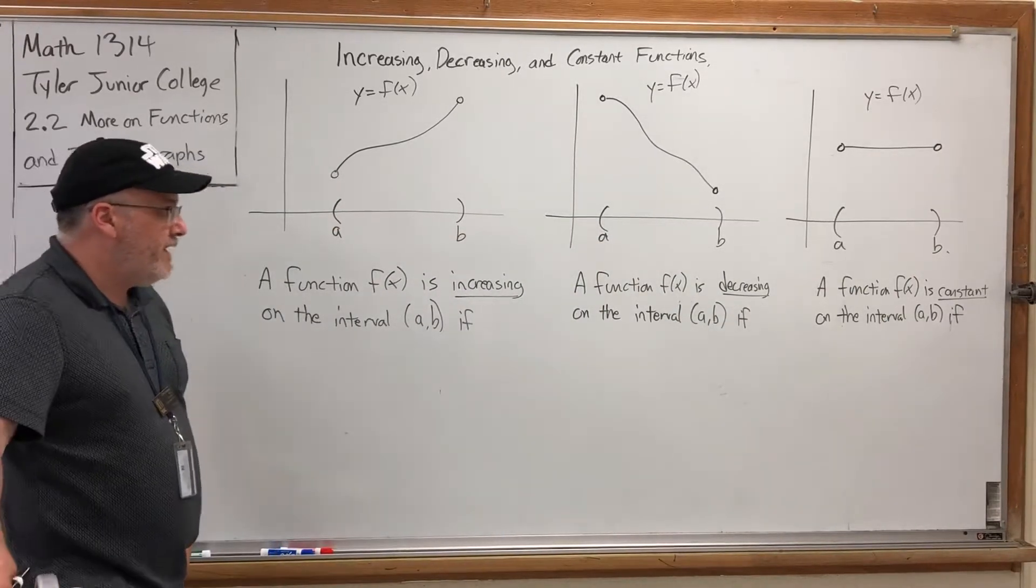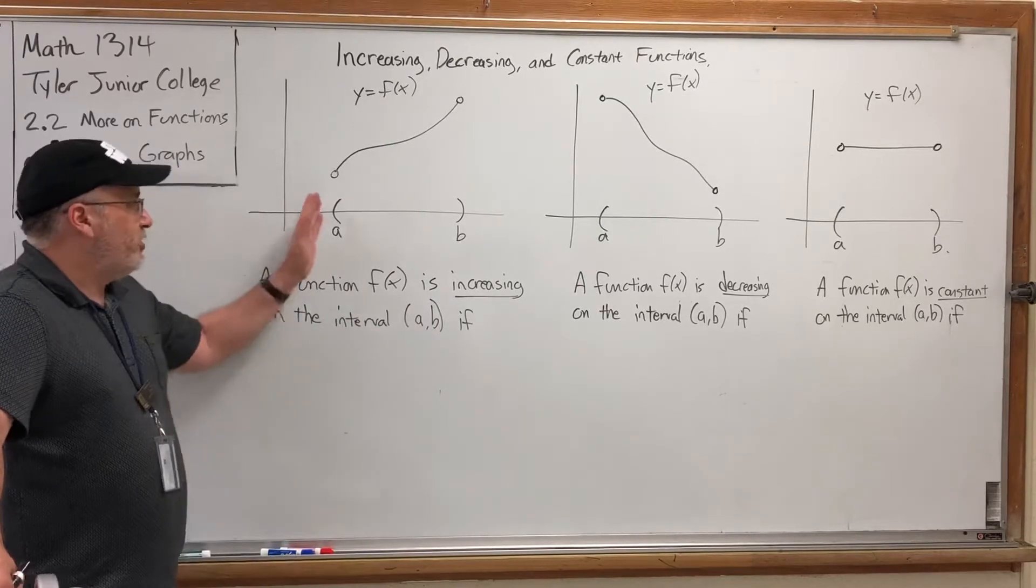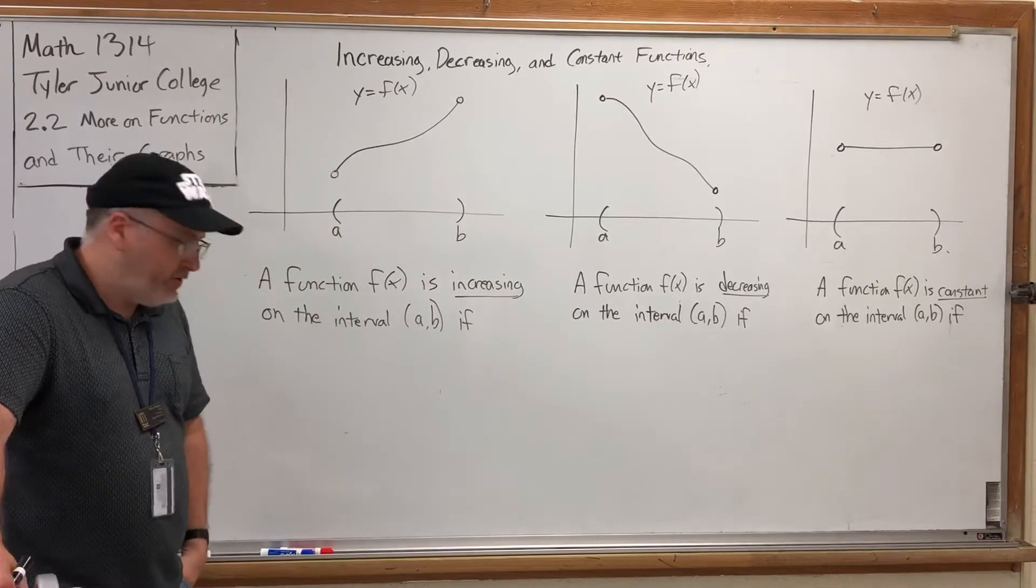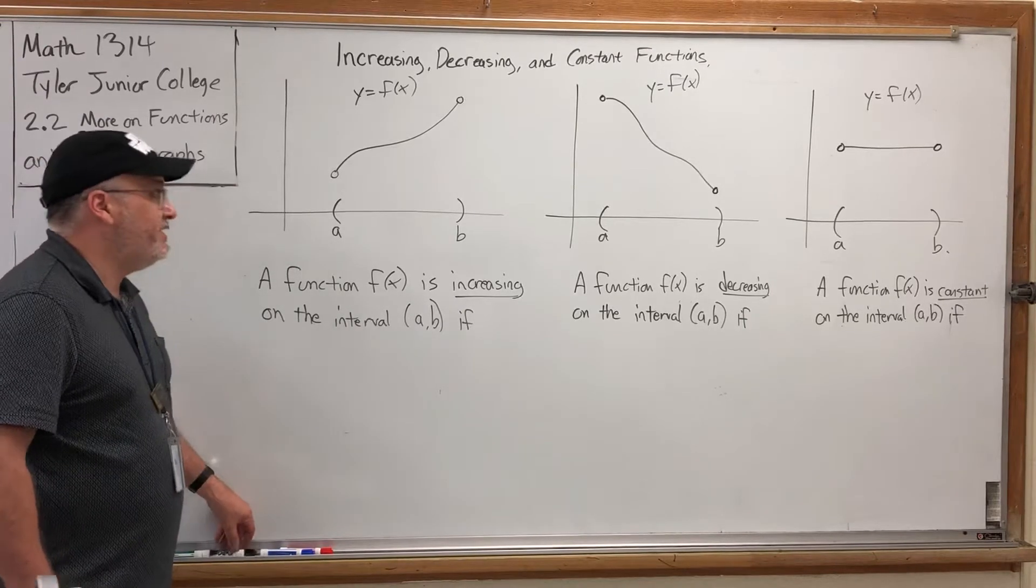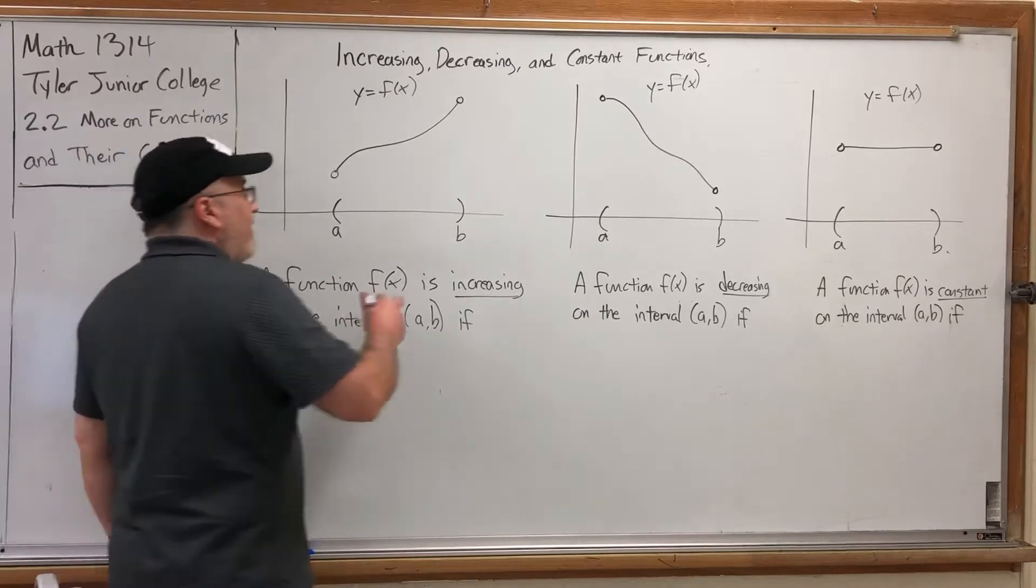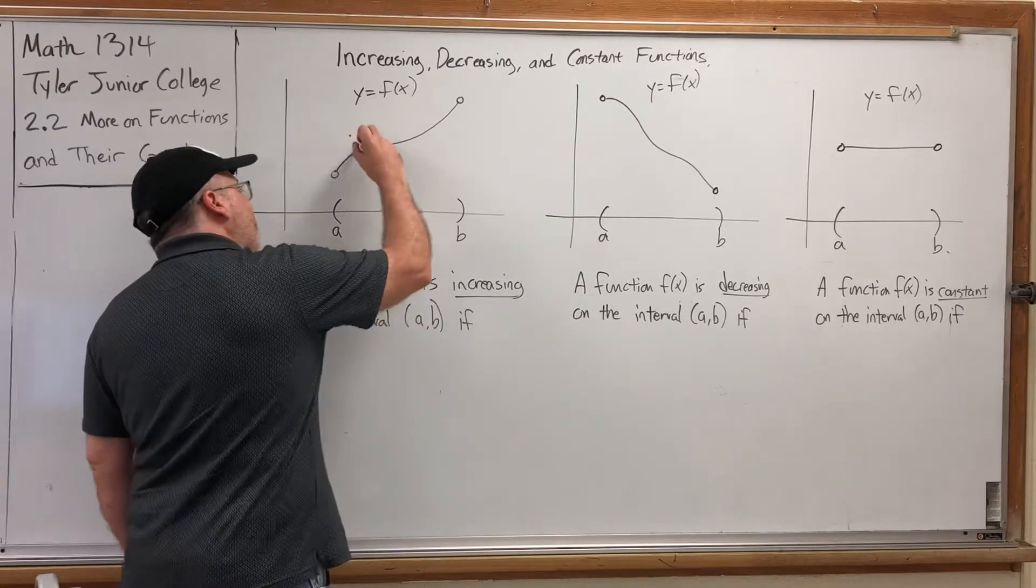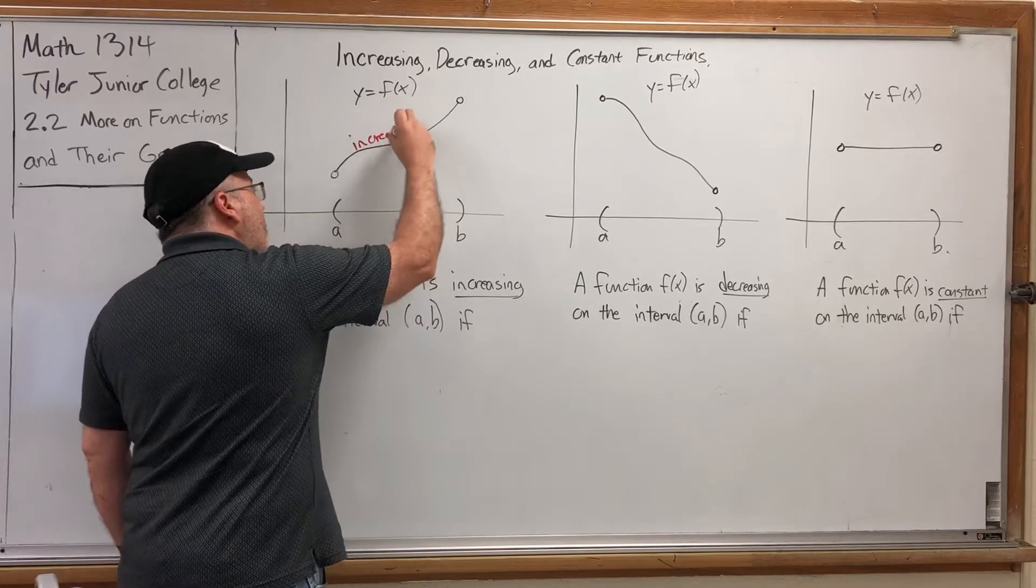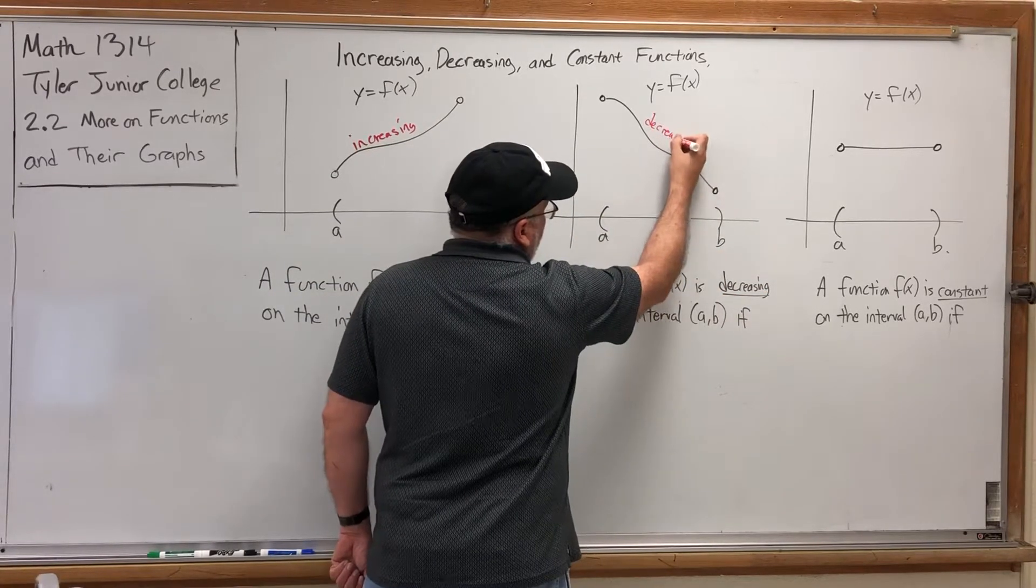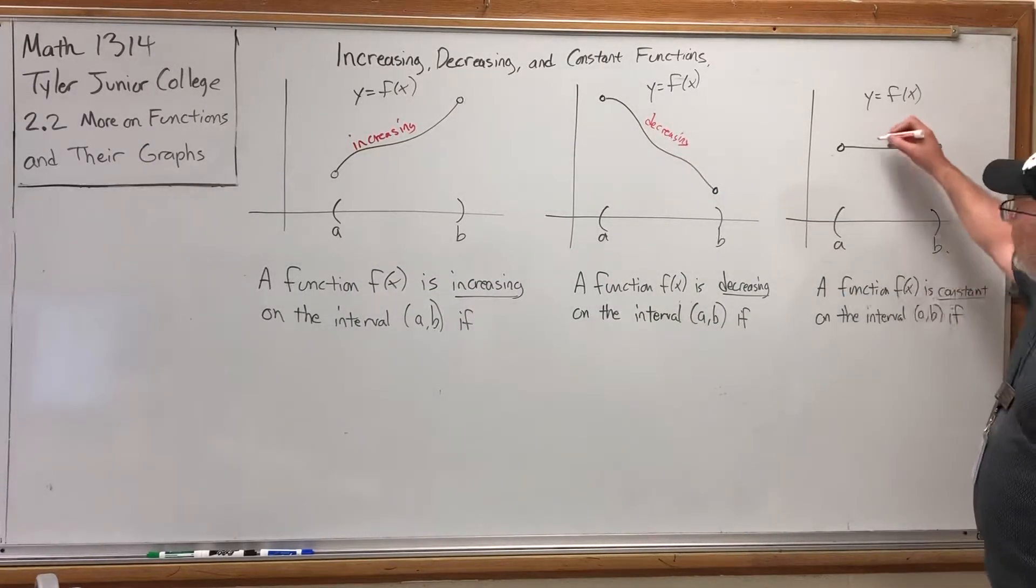All three of these functions are defined on a domain that's just an open interval, generically from a to b. So it starts at one point, ends at another point, but doesn't include the beginning and ending starting points. Visually, it's pretty easy to see why these graphs are called increasing, decreasing, and constant. From left to right, the first graph is going up as we move from left to right, so this graph is increasing. The second graph is going down from left to right, so this graph is decreasing.